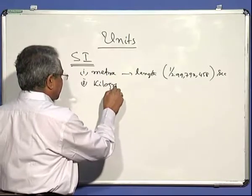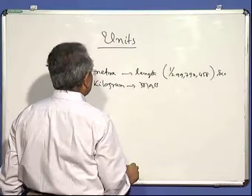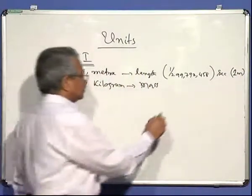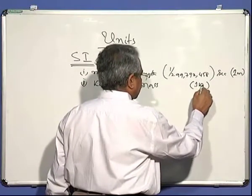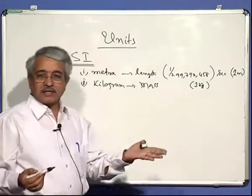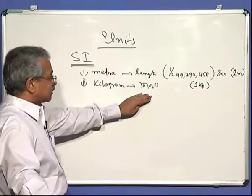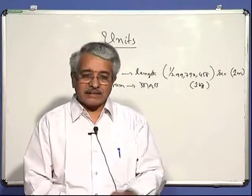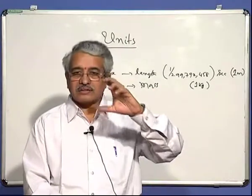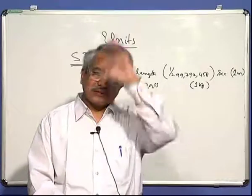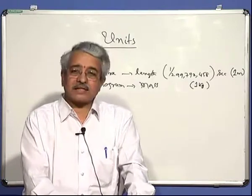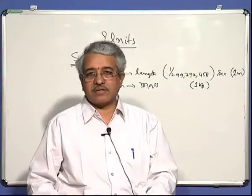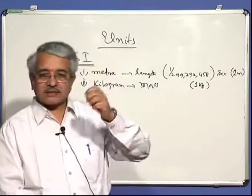The second SI unit is the kilogram, for mass, with the symbol kg. Its definition remains matter-based: a platinum-iridium alloy cylinder of specific prototype dimensions, preserved at the international standards laboratory in Paris. All kilograms used anywhere in the world are duplicates of that preserved standard as far as the matter contained is concerned.